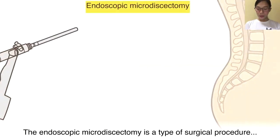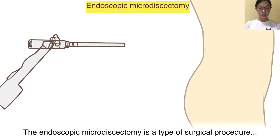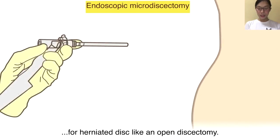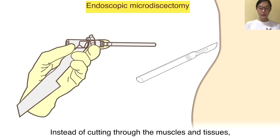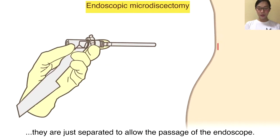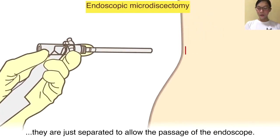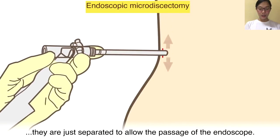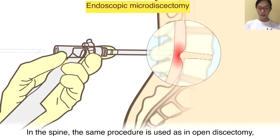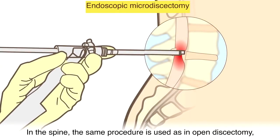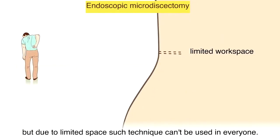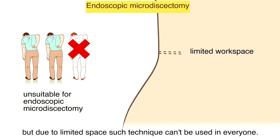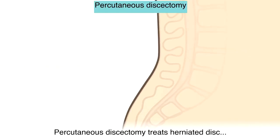The endoscopic microdiscectomy is a type of surgical procedure for herniated disc similar to open discectomy, but a smaller incision and an endoscope or microscope is used. Instead of cutting through the muscles and tissues, they are just separated to allow the passage of the endoscope into the spine. The same procedure is used as in open discectomy, but due to limited space, this technique cannot be used in everyone.